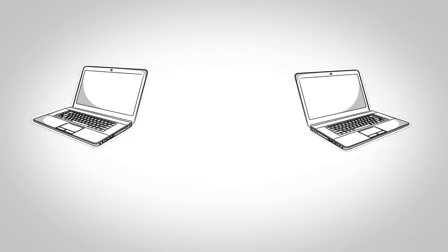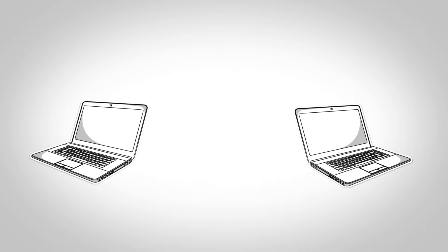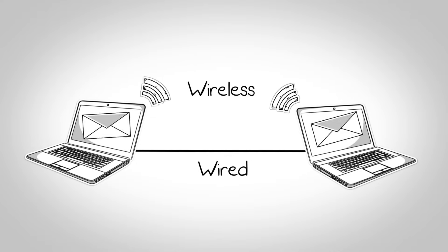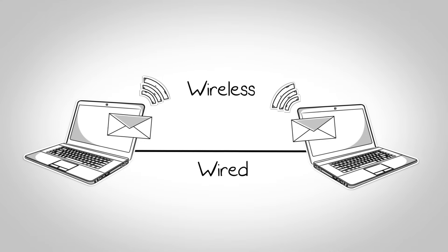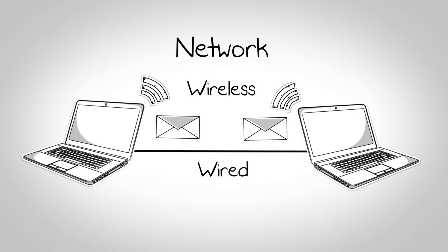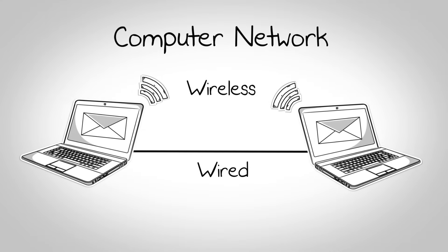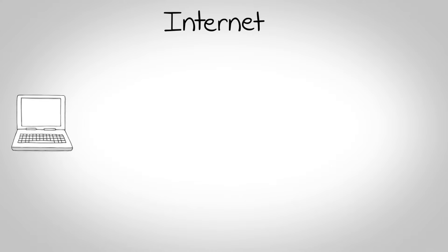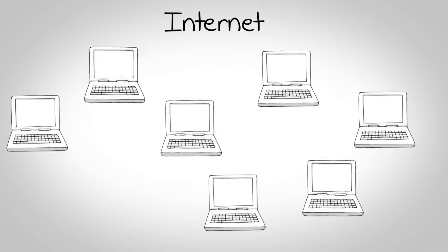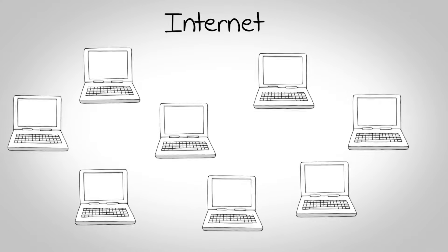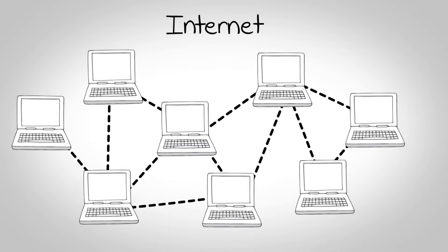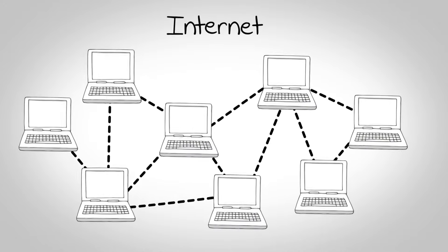In the most basic form, two computers connected to each other via wired or wireless connection, sharing data with each other, forms a network or computer network. Internet is the world's largest computer network consisting of millions of interconnected computers located in hundreds of countries.